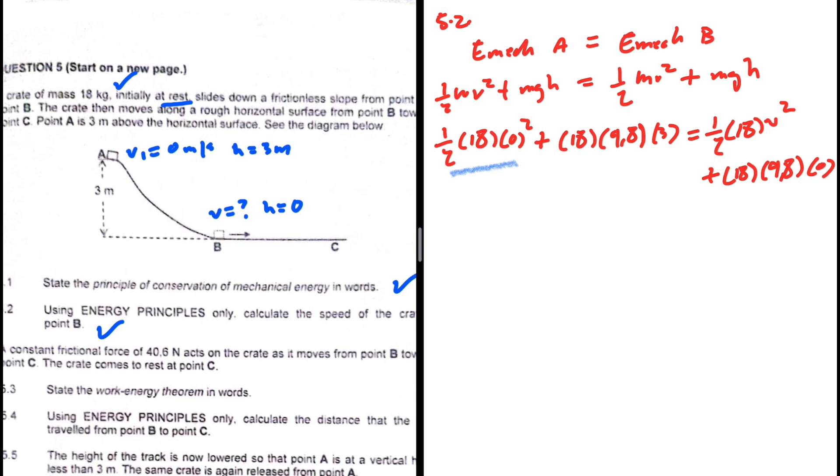So this is going to give us zero, this right here. What is 18 multiplied by 9.8 multiplied by 3? That is 529.2, and this equals 18 over 2, which is 9 v squared. Let's divide both sides by 9. 529.2 divided by 9, we get v squared equals 58.8. Taking square roots on both sides, we get v equals 7.67 meters per second.